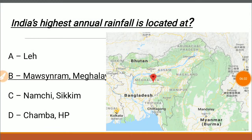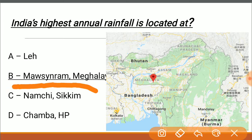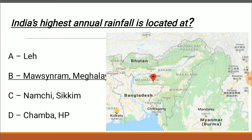India's highest annual rainfall is located at Mawsynram in the state of Meghalaya, whose capital is Shillong. Nowhere in the world does it rain more than at this place. The correct answer is Mawsynram in Meghalaya — it's very important to remember the location because you may be asked to denote it on a map.